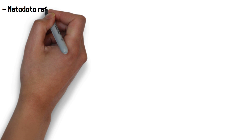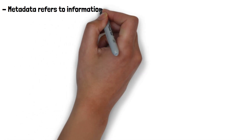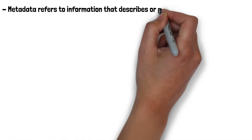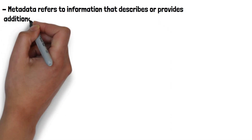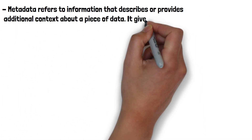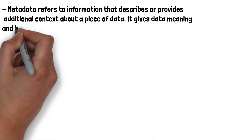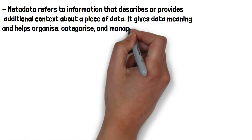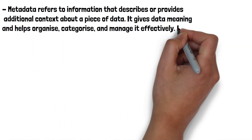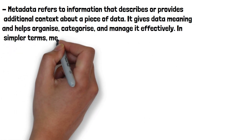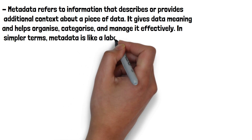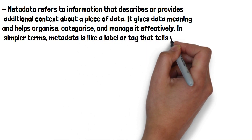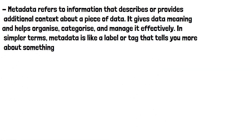Metadata refers to information that describes or provides additional context about a piece of data. It gives data meaning and helps organize, categorize and manage it effectively. In simpler terms, metadata is like a handle or tag that tells you more about something.